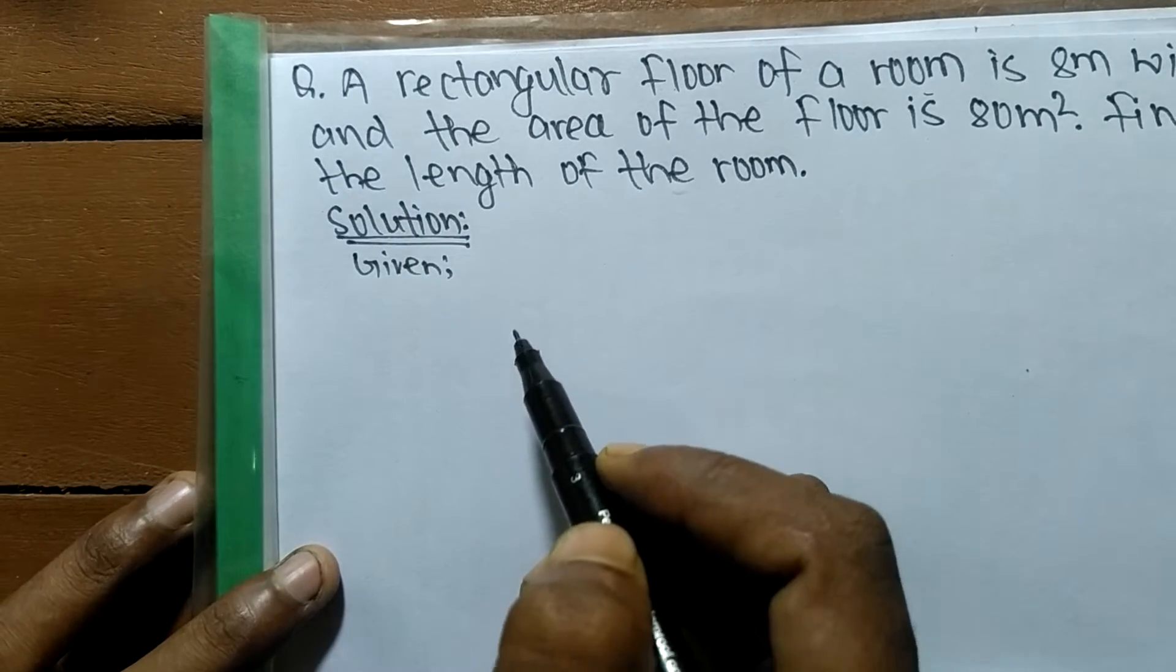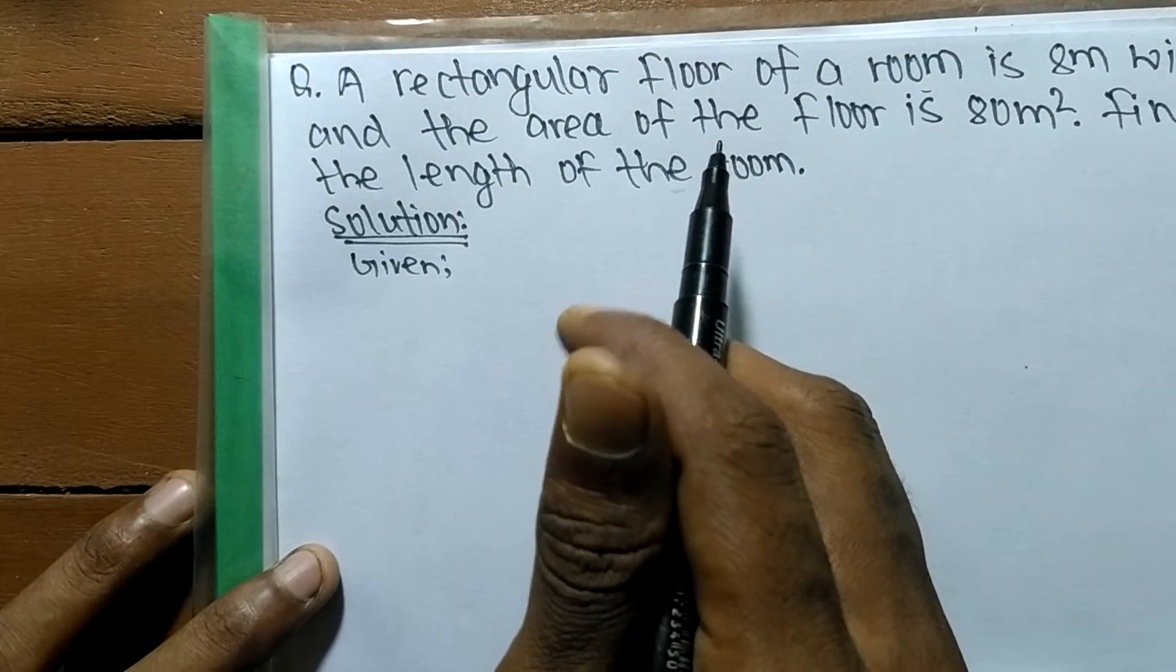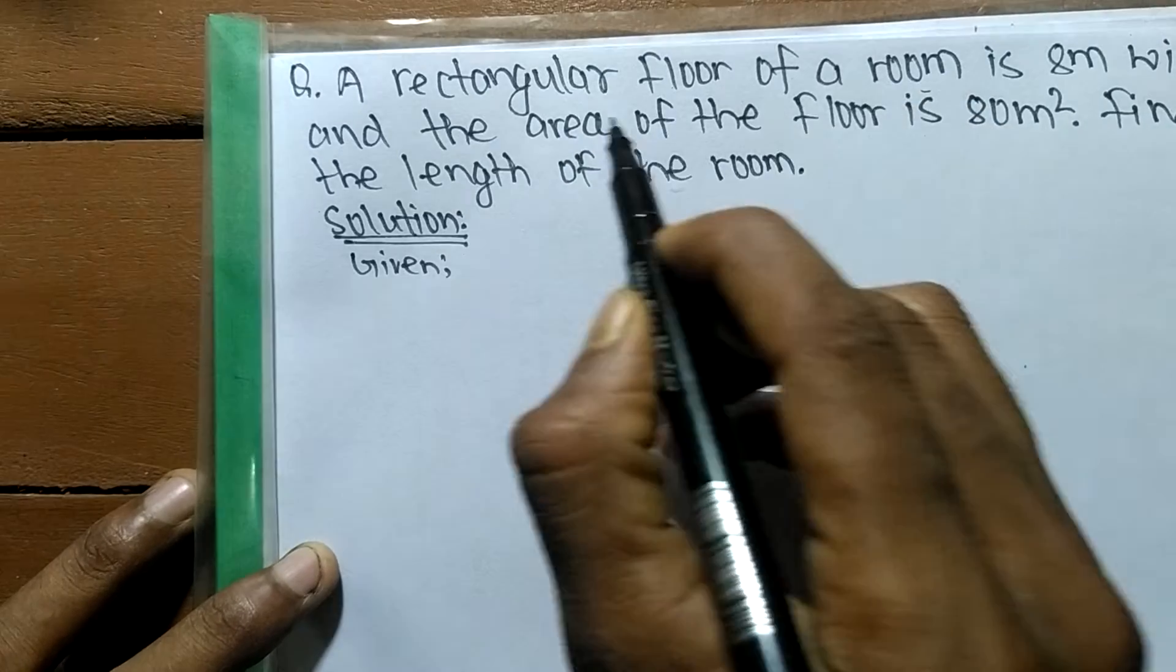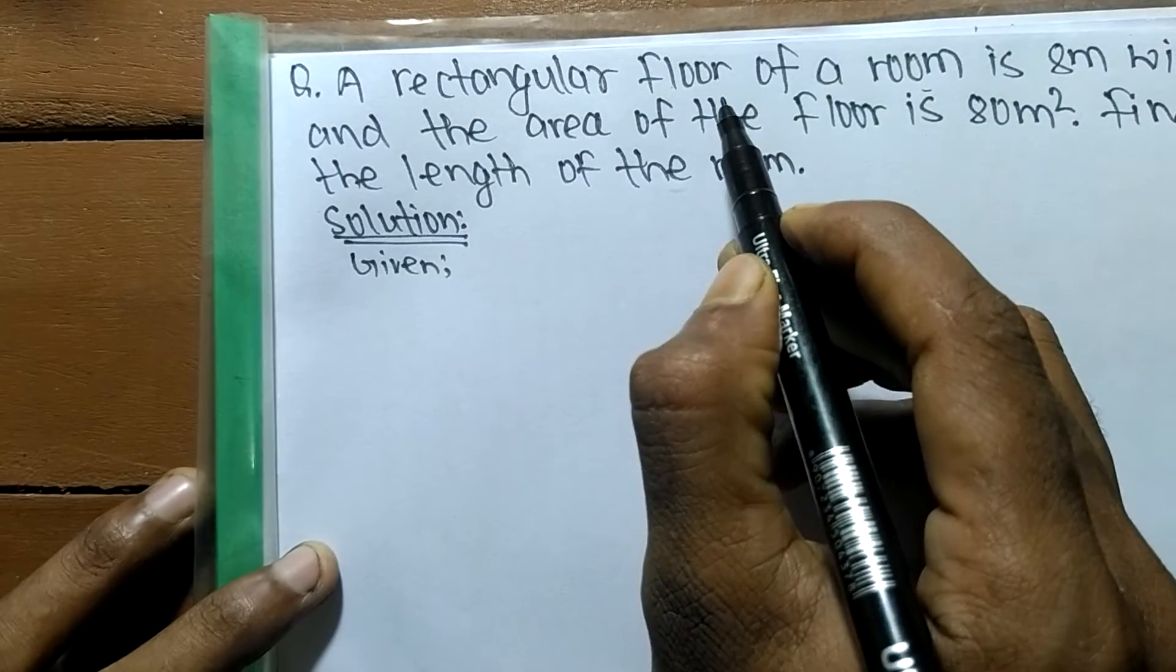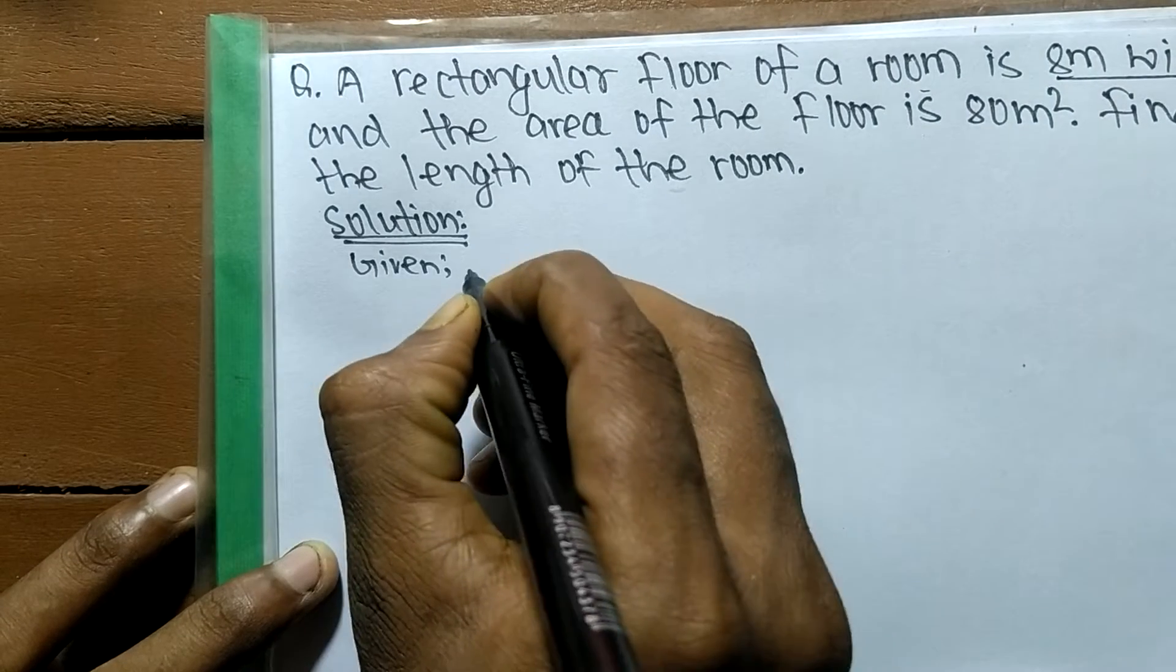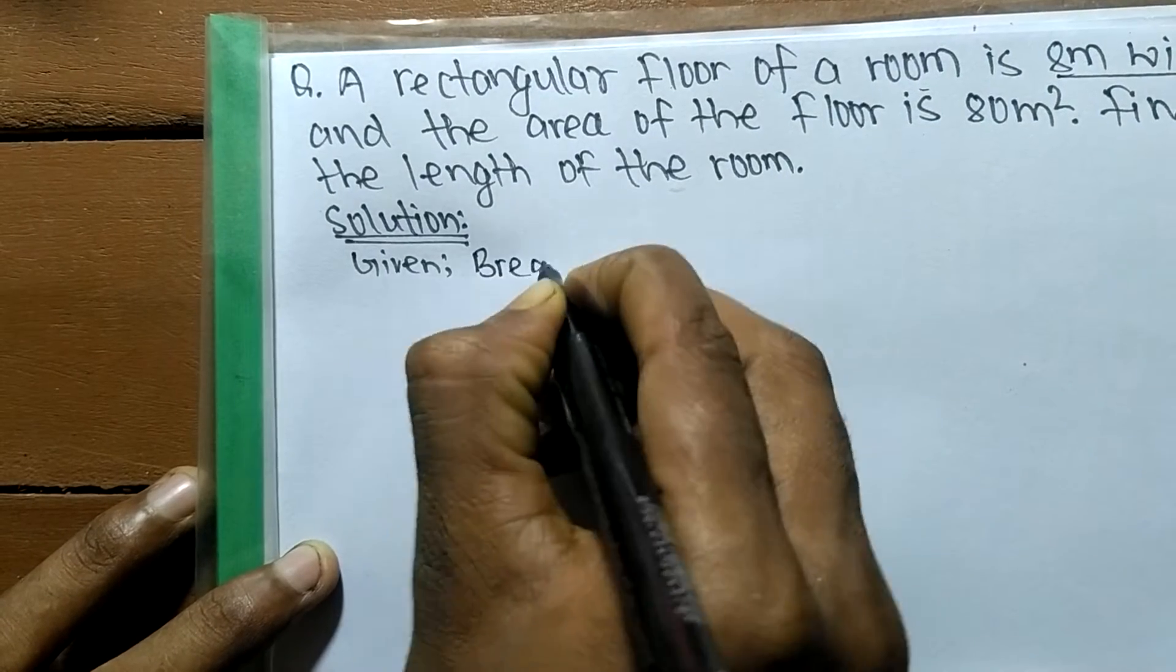First of all, we have to write down the given quantities. Here is given a rectangular room floor of a room is 8m wide, so we have given the breadth.